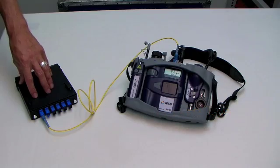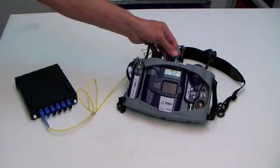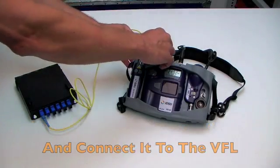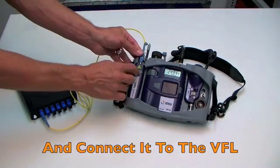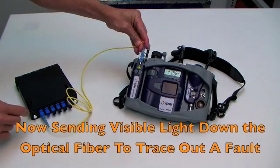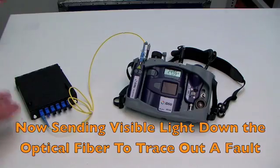Or he's troubleshooting a problem on this line and he doesn't have power, he can take the test lead out of the optical power meter and put it right into the VFL. Turn the VFL on, and now he's sending visible light down the optical fiber so he can trace out a fault.